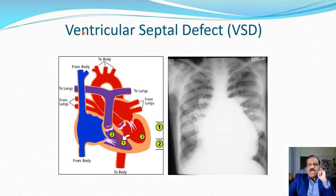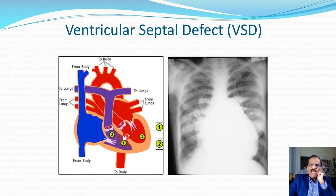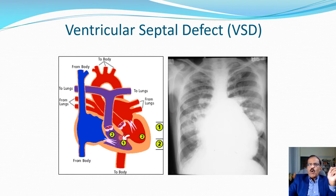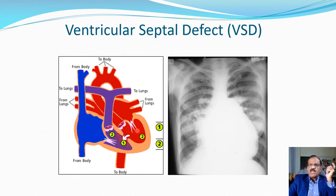Let's take up ventricular septal defect. Normally our intraventricular septum is an intact structure with no communication between the two ventricles. If there is a defect, there will be abnormal flow of blood. Since there is no additional outflow obstruction in VSD, blood will always flow from the left to the right, which is why we call it a left-to-right shunt.